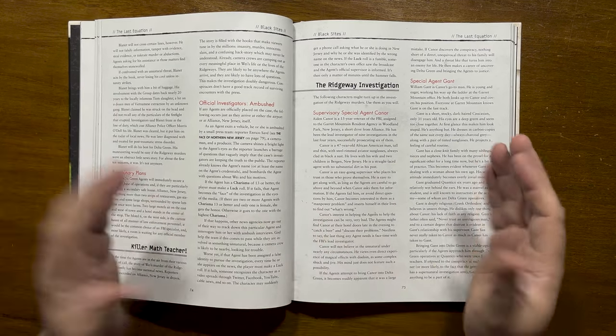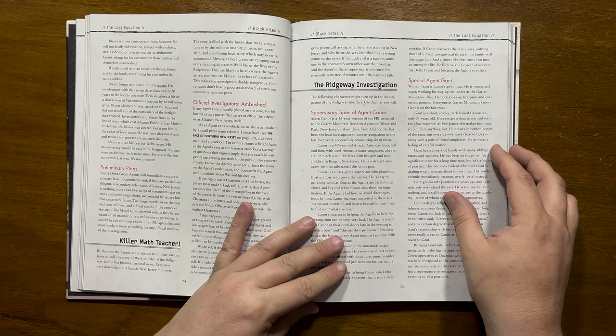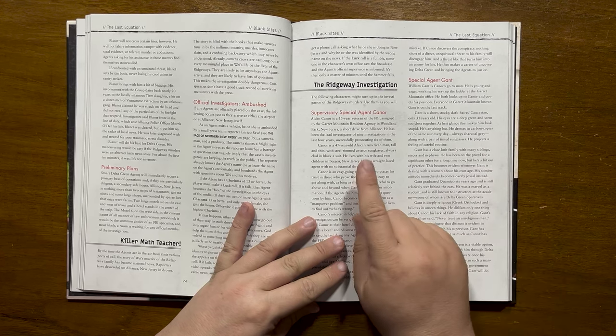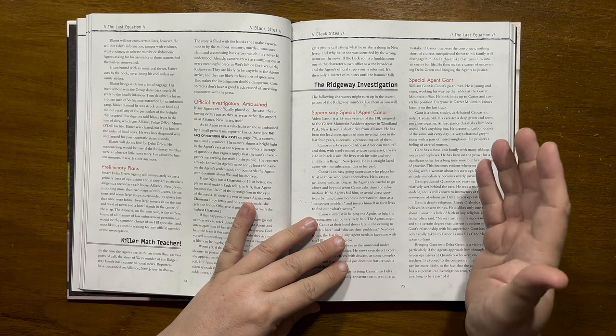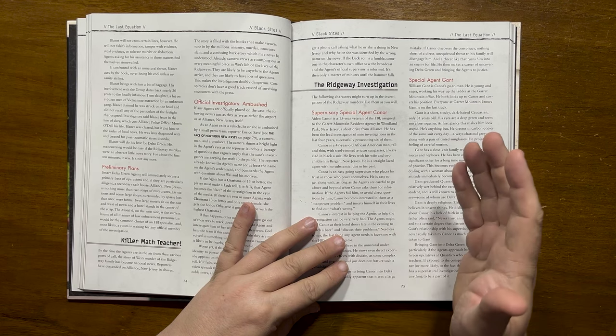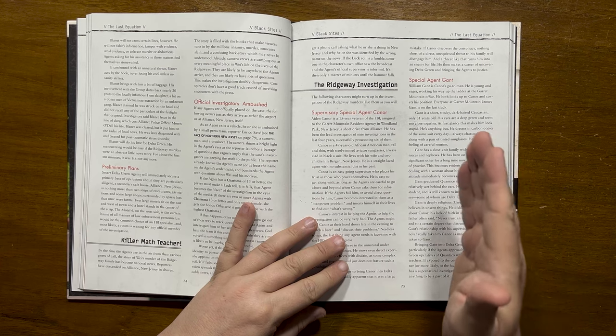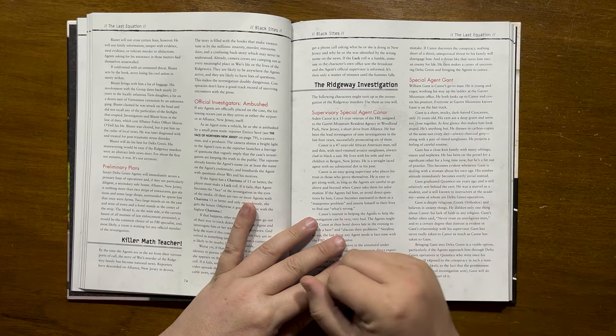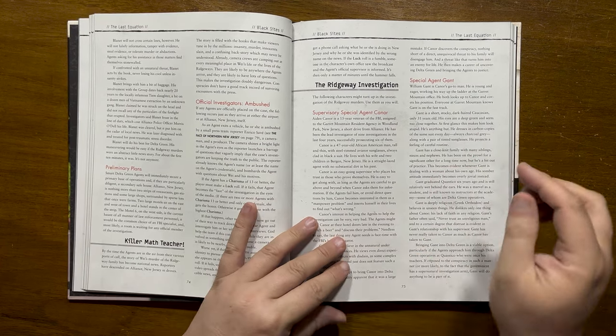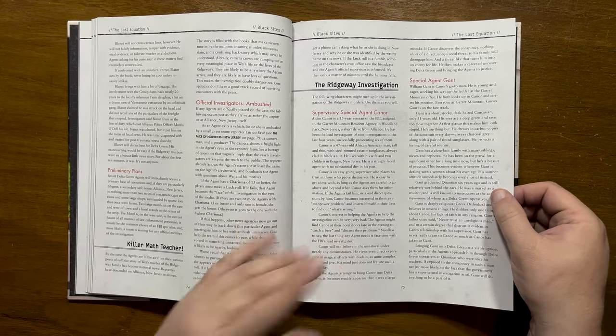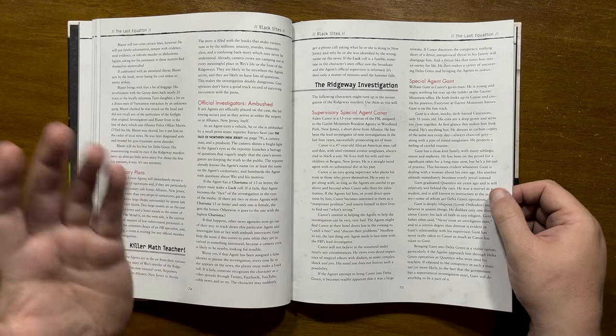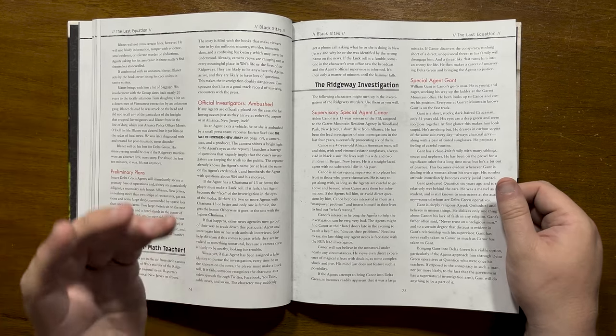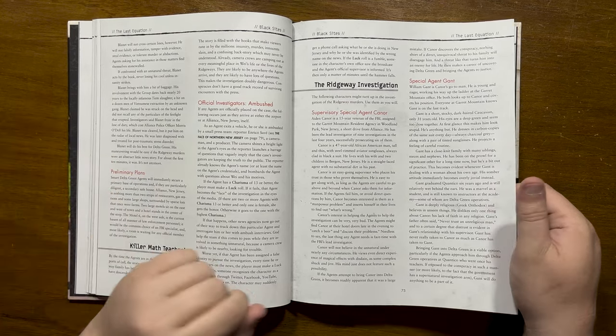The next part details the characters of importance in the investigation. First up is Supervisory Special Agent Aidan Kane, a 15-year FBI veteran who places trust in his team as long as they go above and beyond for him. If the players try to recruit him to Delta Green, he will make a career of uncovering them and bringing them to justice. Then Special Agent William Gant, whose eyes look too close together making him look stupid, but he was actually very good at his job. Delta Green is a viable option here as some of his superiors in Quantico are operatives and he will jump at the chance if he is given it.